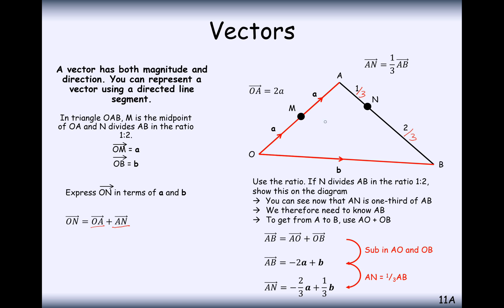Now we've got both components we need for O to N. To get from O to N, we need to go along 2a's first, then we need to go along a third of this whole line, which is what we've got here. Simplify your answers together, and you get ON equals four-thirds a plus a third b.